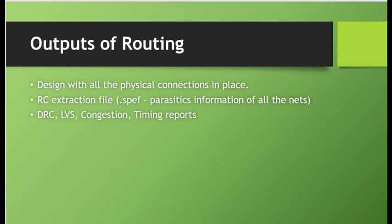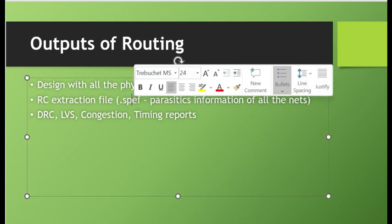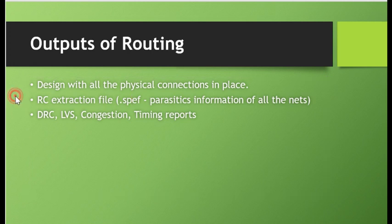Once the routing is completed, we will have the design with all the physical connections in place. Because we have all the physical connections in place, we can extract the parasitic information of all the nets in the form of a SPEF file. We can also finally get the DRC, LVS, congestion, and timing reports because all steps of the PNR flow are done. Since routing is complete, we will have the final timing, congestion, DRC, and LVS numbers.